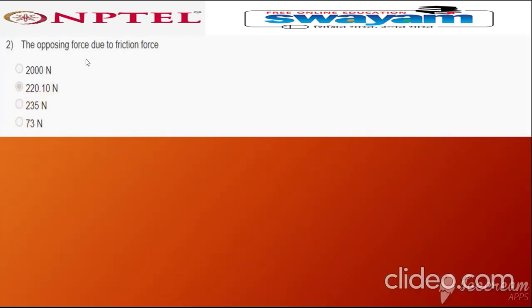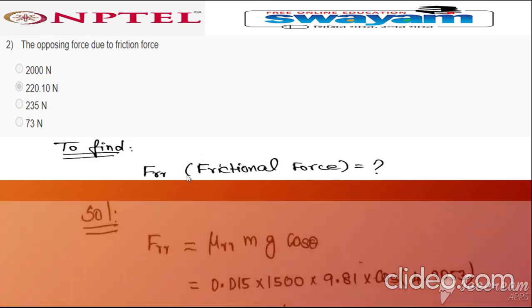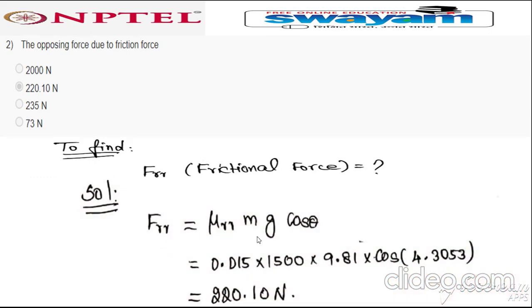Question two: the opposing force due to friction. The rolling resistance force F_rr = μ_rr × m × g × cos(θ). Substituting μ_rr = 0.015, m = 1500, g = 9.81, and cos(θ) using the theta calculated in the previous question, we get 220.10 N. The correct answer is option two.